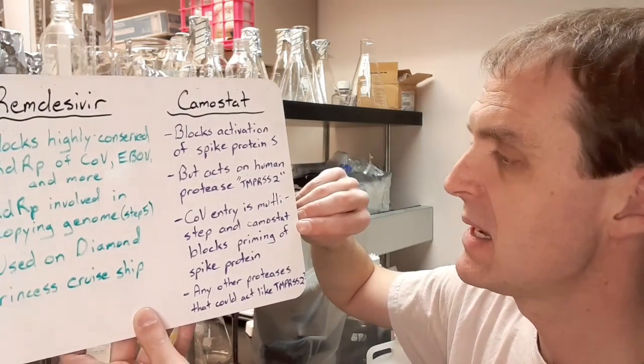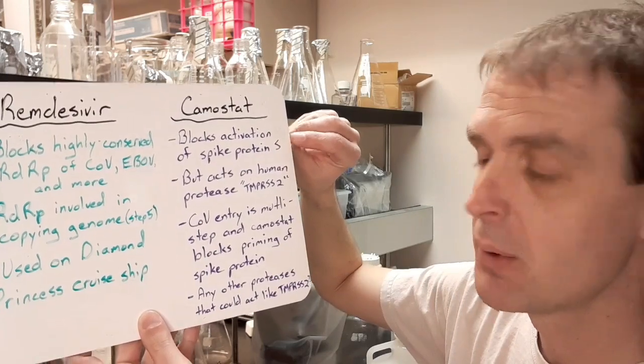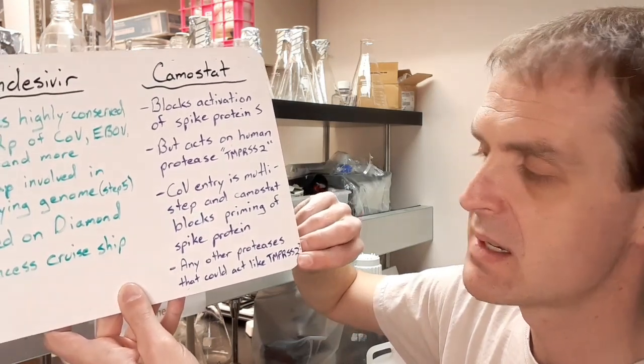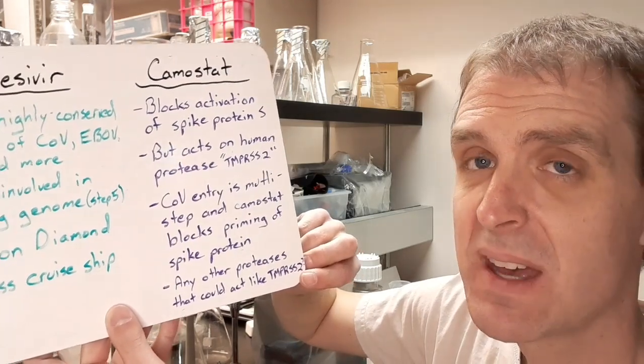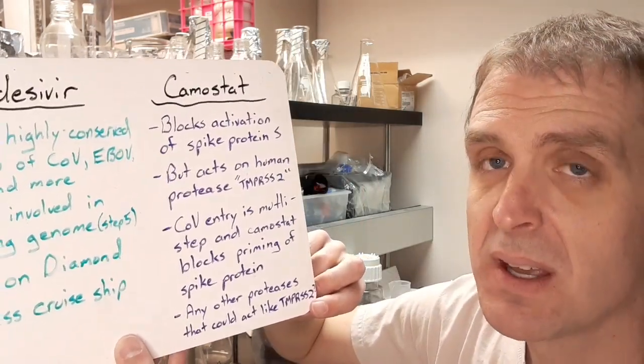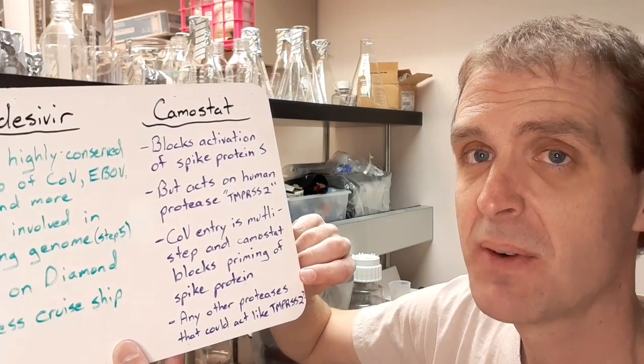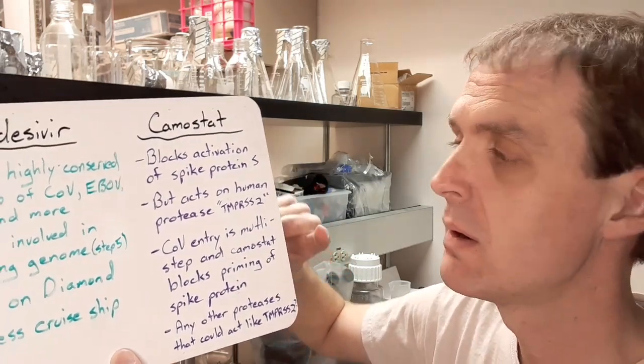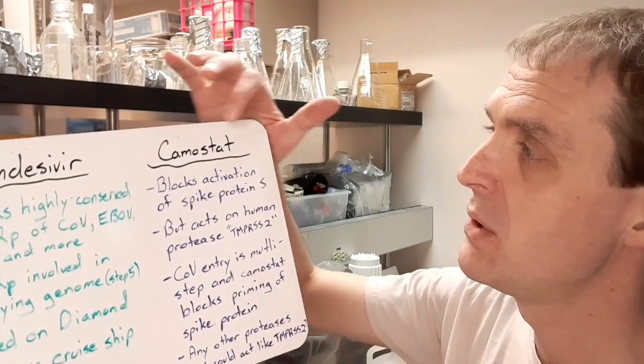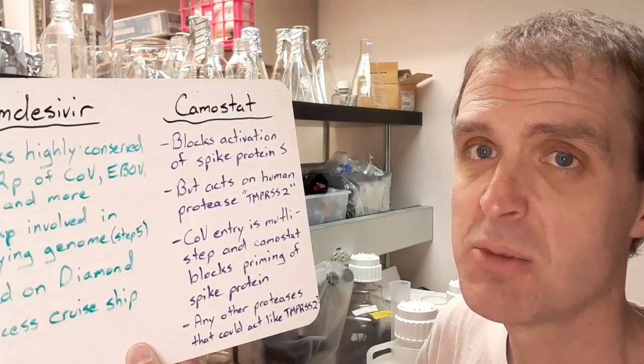Coronaviruses entry is a multi-step process, and the camostat blocks the priming of the spike protein. And then any other proteases that... There's a question here. Are there any other proteases that could act like TMPRSS2? And if that's true, this camostat might be able to block this particular protease, but then again, it's possible that the human cells make a different protease that could be redundant with this. And so time will tell whether this camostat will be effective, and it really hinges on whether you can reach therapeutic levels to block the coronavirus spike activation, and whether there are other proteases that can do that same job that camostat did.